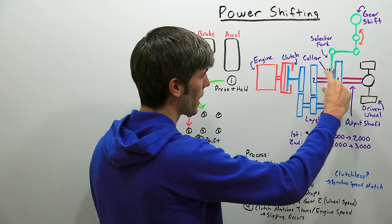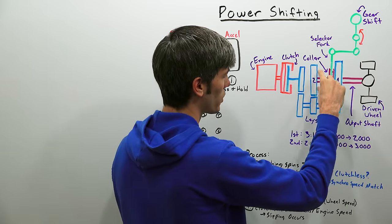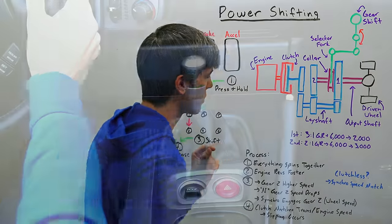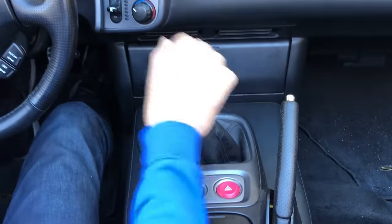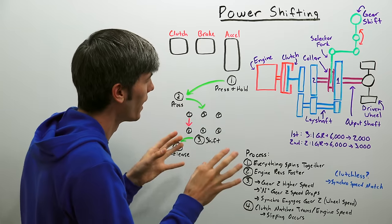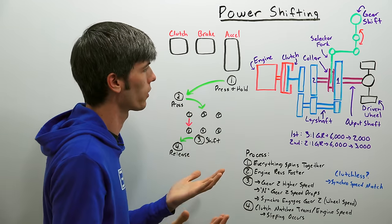And your synchronizers job as you move this collar from first to second is to match that speed, so it's going to take the speed that this is rotating at which is different from this and match them together. Now some people will say that power shifting is bad for your synchronizers and really it's no worse than shifting quickly in any other scenario.